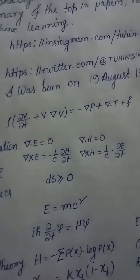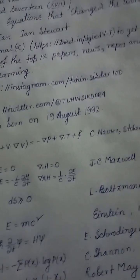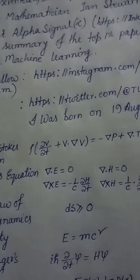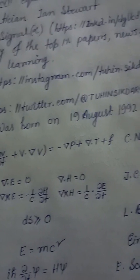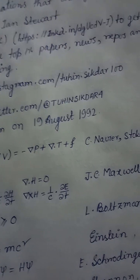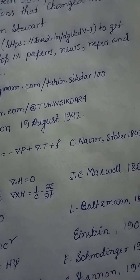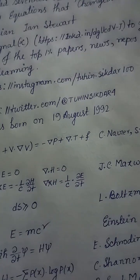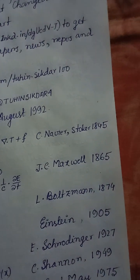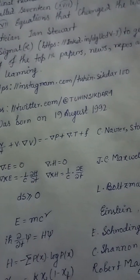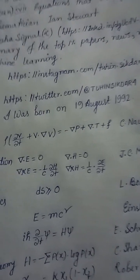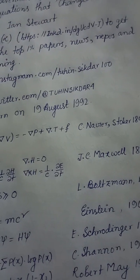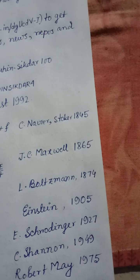Equation 10 — Navier-Stokes equation: ρ(∂v/∂t + v·∇v) = −∇p + μ∇²v + f. Navier-Stokes, 1845. Equation 11 — Maxwell's equations: ∇·E = 0; ∇×E = −(1/c)(∂H/∂t); ∇·H = 0; ∇×H = (1/c)(∂E/∂t). J.C. Maxwell, 1865.